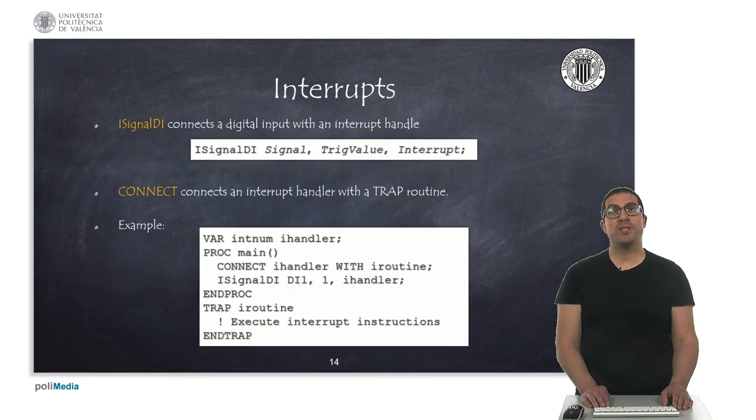Finally, it's worth mentioning that the program flow can make jumps to interrupt subroutines. We can connect a digital input signal to a trap subroutine, as shown in the code example. First, we establish a connection between the interrupt handler and the trap routine with the CONNECT instruction. Then, the ISignalDI instruction will enable the interrupt when the digital signal takes the indicated value.